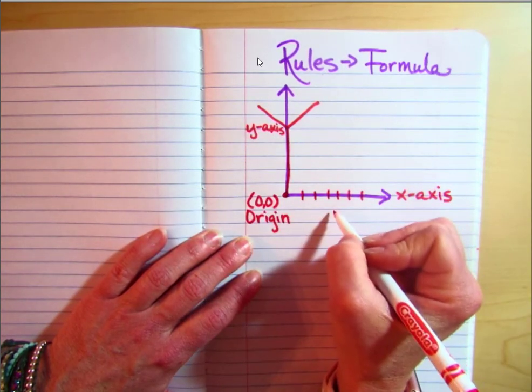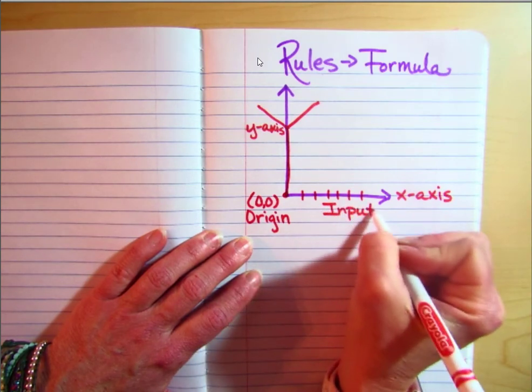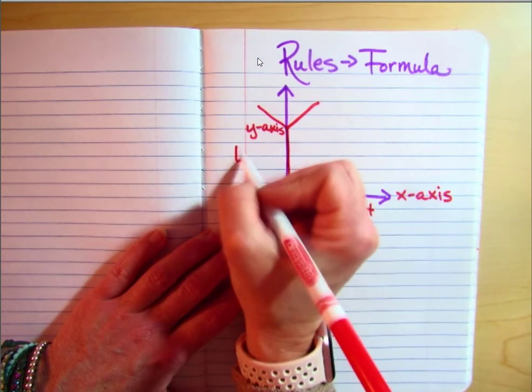So this part is going to be your input and your coordinate, and this is going to be your output.